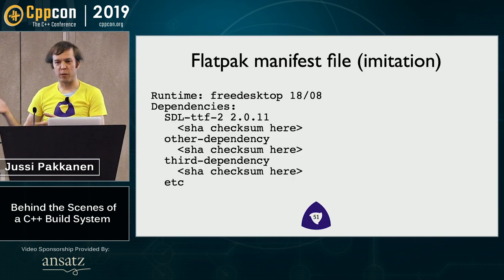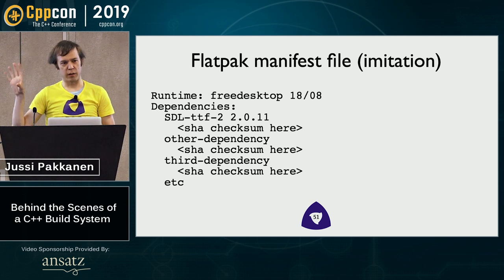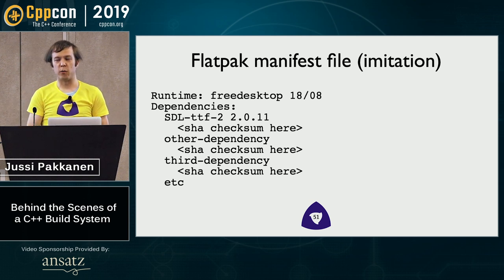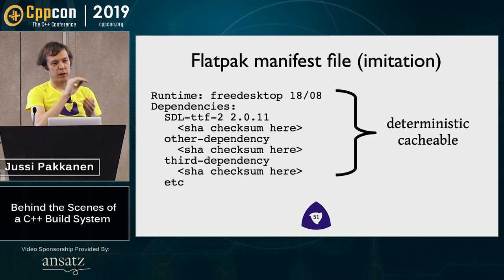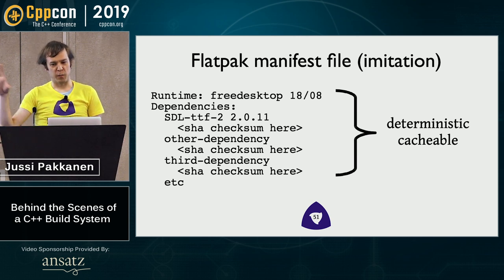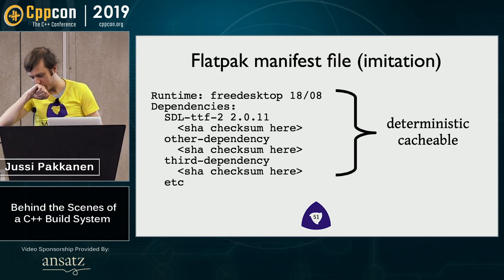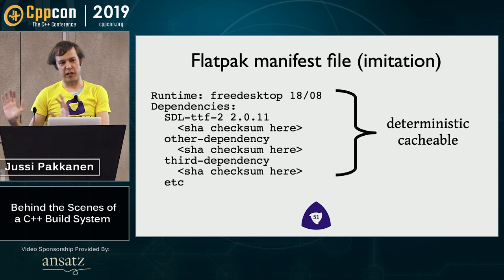If you look at the Flatpak manifest file, you say: 'I have a basic runtime, then extra dependencies installed in the standard Unix build way, and then you install your own software on top of that.' Your computer science sense should be tingling, because this is fully deterministic and fully cacheable. Just this file completely uniquely identifies the image. So if you have a cloud build environment, you can pre-build this image with all the dependencies you'll ever need, put it there, and have people develop on that — they only have to compile their own code. And it works just as if you had installed everything on your system, except it's fully isolated from everything else.